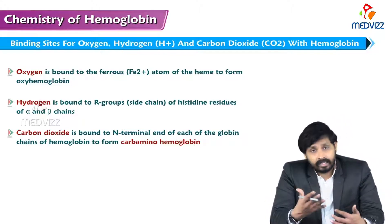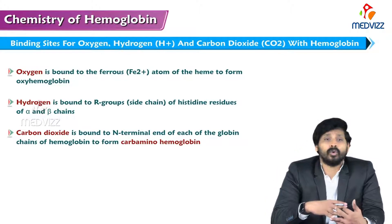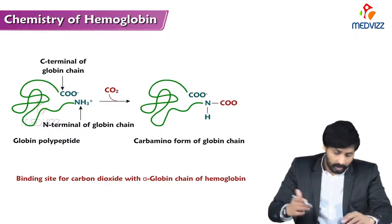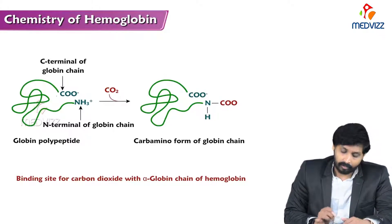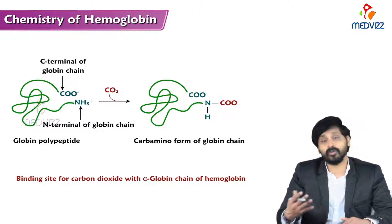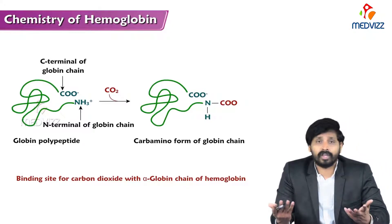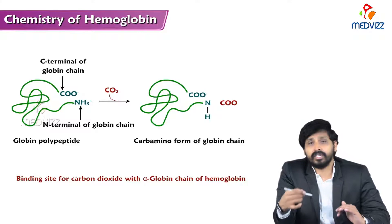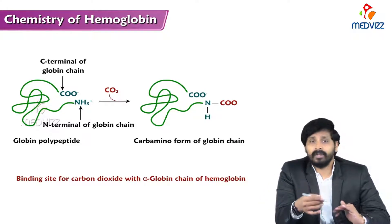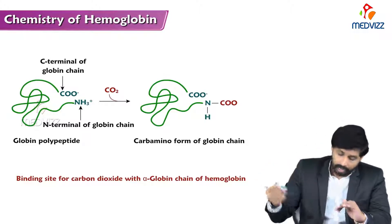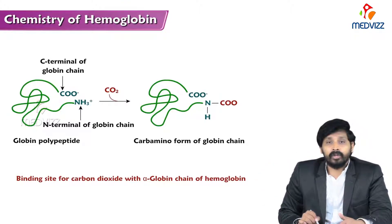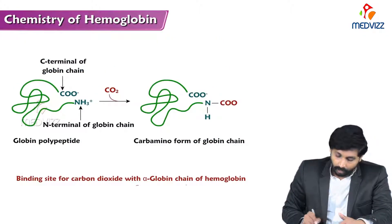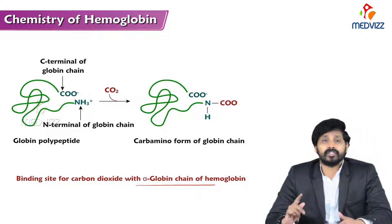When carbon dioxide is bound to the amino terminal end of each globin chain of hemoglobin, it forms carbaminohemoglobin. Globin chains are proteins, so each protein has a carboxy terminal and an amino terminal. The carbon dioxide produced at the cellular level attaches to the amino terminal end of the globin chain and forms carbaminohemoglobin, which may attach to the alpha globin chain of the hemoglobin.